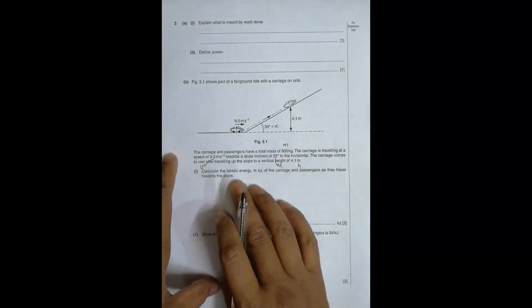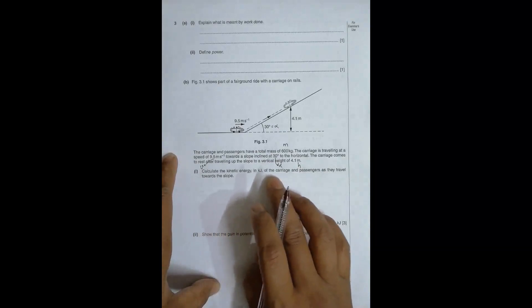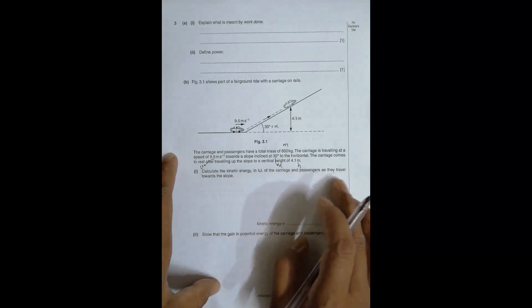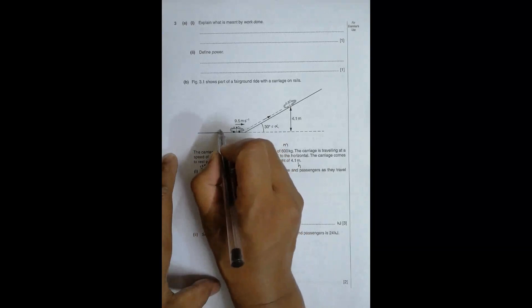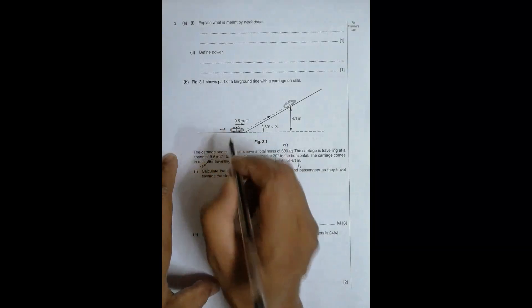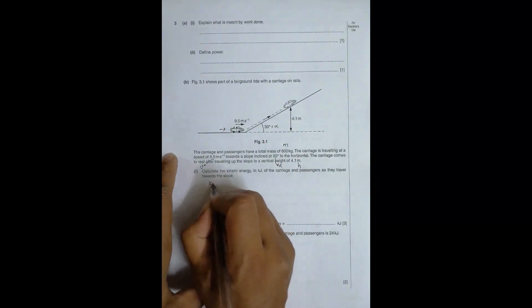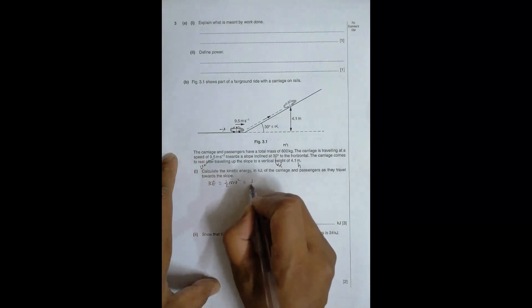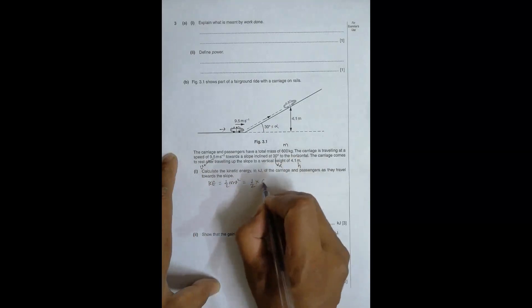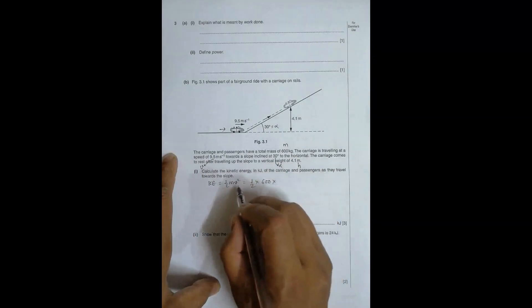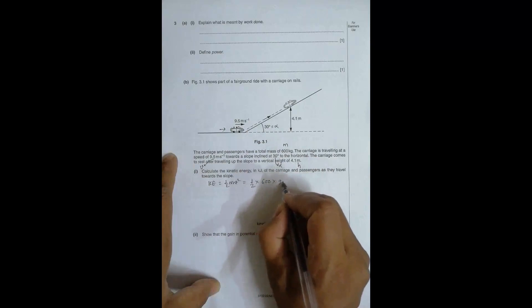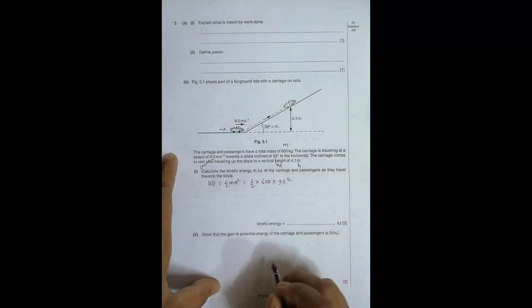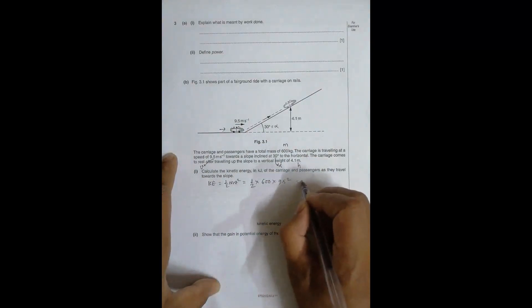Calculate the kinetic energy in kilojoules of the carriage and passengers as they travel towards the slope. The KE is equal to ½mv². That's equal to ½ × 600 kg × (9.5)².